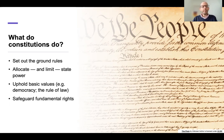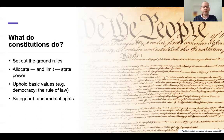We would also expect a constitution to tell us something about the basic values of the society concerned. We might look to see whether the constitution has things to say about democracy and the rule of law. If it does, that will be telling — and equally, if it doesn't, that will be telling. If a society intends to base itself on these values, then at least as a starting point, we would expect to see them reflected in the constitution.